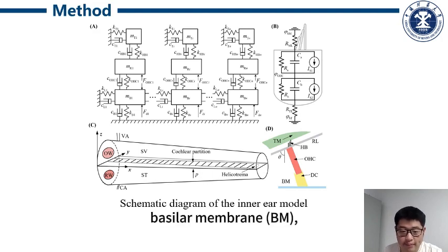In the three degrees of freedom, the basilar membrane (BM), reticular lamina (RL), and tectorial membrane (TM) were considered in each segment.